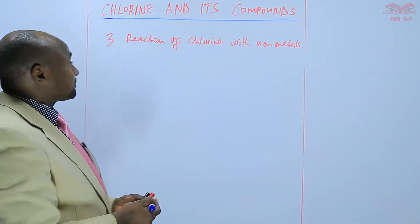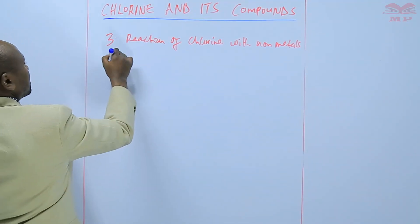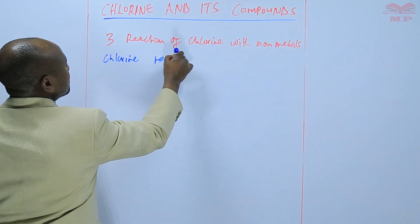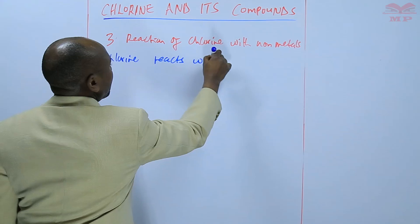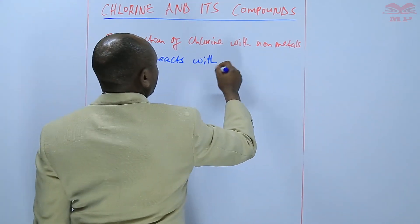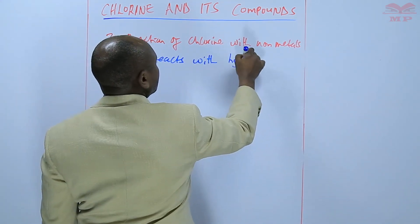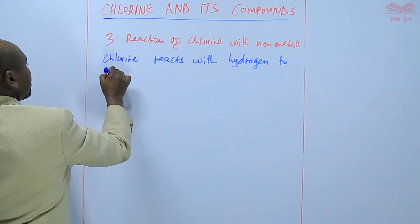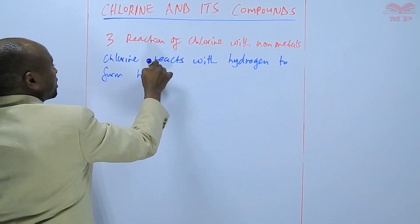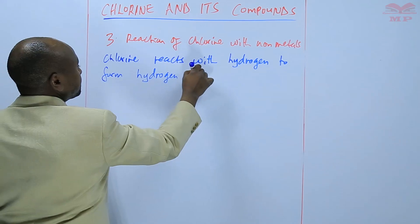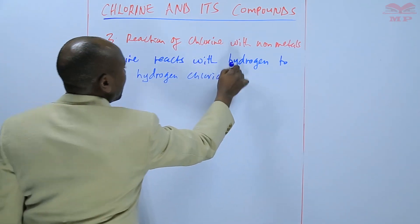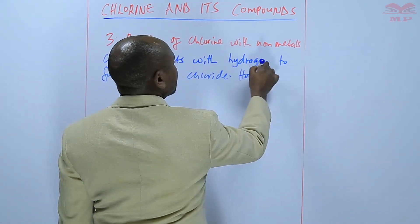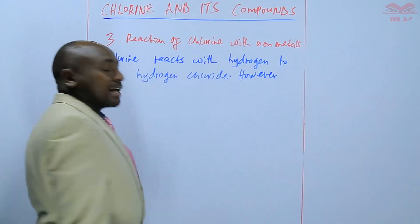For example, we can say that chlorine reacts with hydrogen to form hydrogen chloride. However, this reaction does not take place at room temperature.